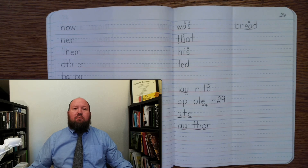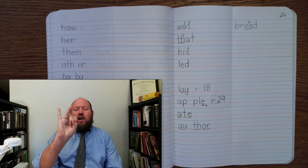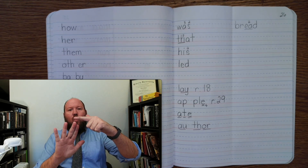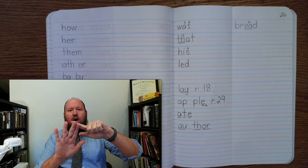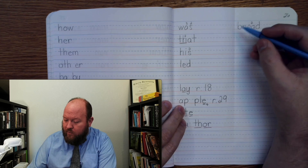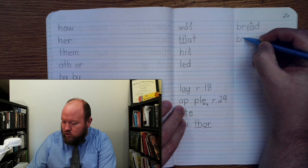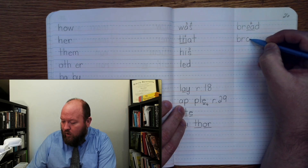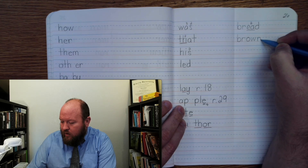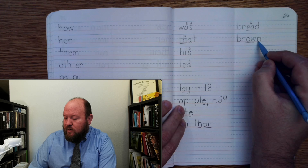The next word is brown, like the color. Brown. Buh-r-r-ow-n. Brown. And here we're going to use the OW phonogram. Write the word brown. Buh-r-r-ow-n. Markings. Buh-r-r-ow-n. Brown.